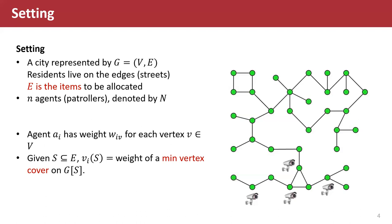Residents live on the edges, or we say the streets. We need to allocate all the edges to the n agents, or patrollers, denoted by N. Agent aᵢ has weight wᵢᵥ for each vertex v. Given S ⊆ E, vᵢ(S) equals the weight of a minimum vertex cover on G[S].